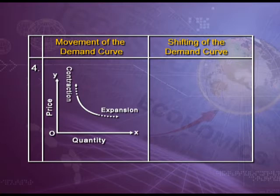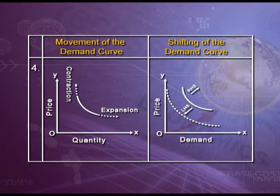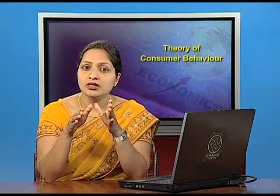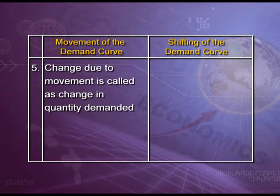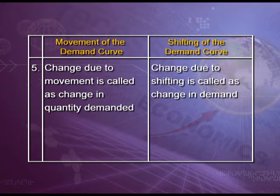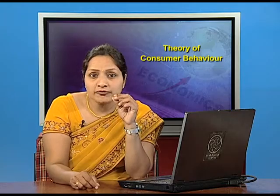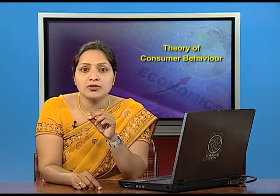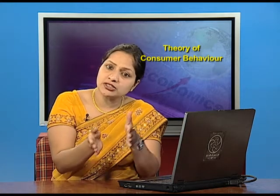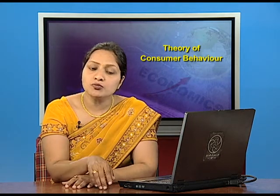Movement along the demand curve — going downward or upward — is caused by a change in the good's own price. Whereas shifting to the right or left is due to a change in any factor other than its own price. Movement in the demand curve is known as change in quantity demanded, and shifting of the demand curve is known as change in demand. Whenever you read the term 'change in demand' it means shifting, and 'change in quantity demanded' means movement.